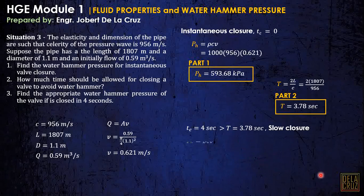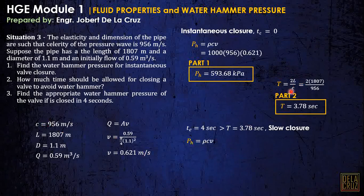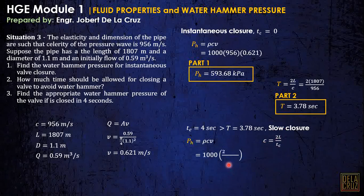If slow closure occurs, the formula is still ρCB, but we will recalculate C. For slow closure, the celerity used is not the given one — we recalculate it using the formula: C equals 2L over TC. This is derived by cross-multiplying C and T from the formula T = 2L/C, but using TC instead. So C = 2L over TC.